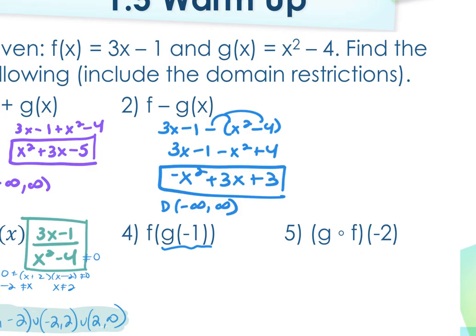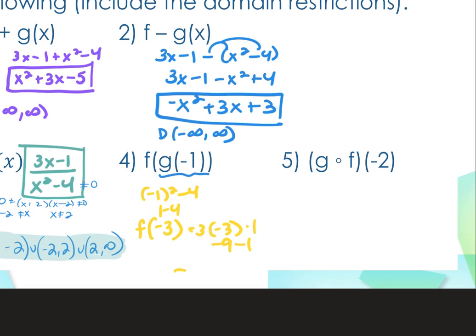So I'm going to go g of negative 1. So into g, I plug in my negative 1, and I get 1 minus 4, which is negative 3, and then I'm going to find f of negative 3. So now I plug it into the f, and I get 3 times negative 3 minus 1, or negative 9 minus 1, which is negative 10.